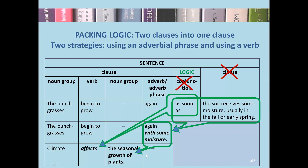We have two strategies for packing the logic associated with conjunctions: one with an adverb phrase, and the other with a causal verb.